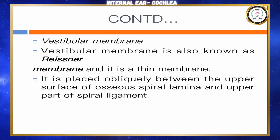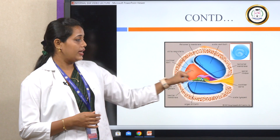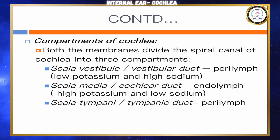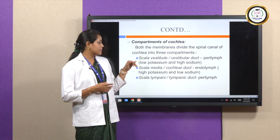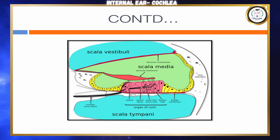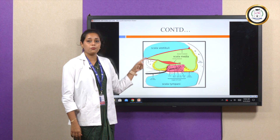The vestibular membrane, also known as the Reissner's membrane, is a thin membrane obliquely placed between the superior part of the spiral ligament and the upper part of the osseous spiral lamina. These two membranes divide the cochlea into three distinct compartments: the scala vestibuli, scala media, and scala tympani.